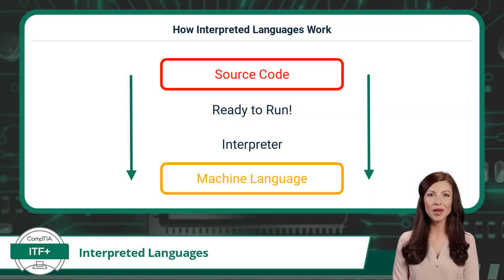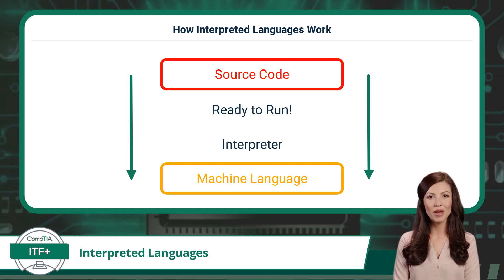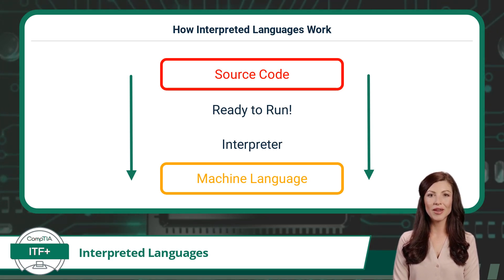Just as you might use a translator to understand a language you're not familiar with, computers use interpreters to understand and execute the instructions you give it in a programming language. Unlike compilers, which translate the entire program up front, interpreters work line by line, converting your human-readable code into machine instructions as it goes.